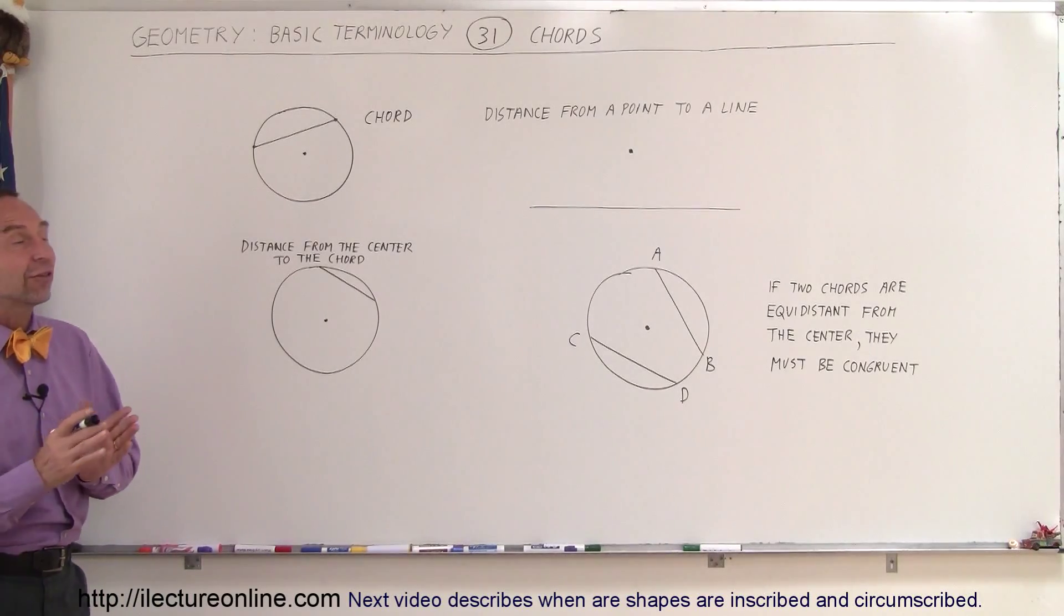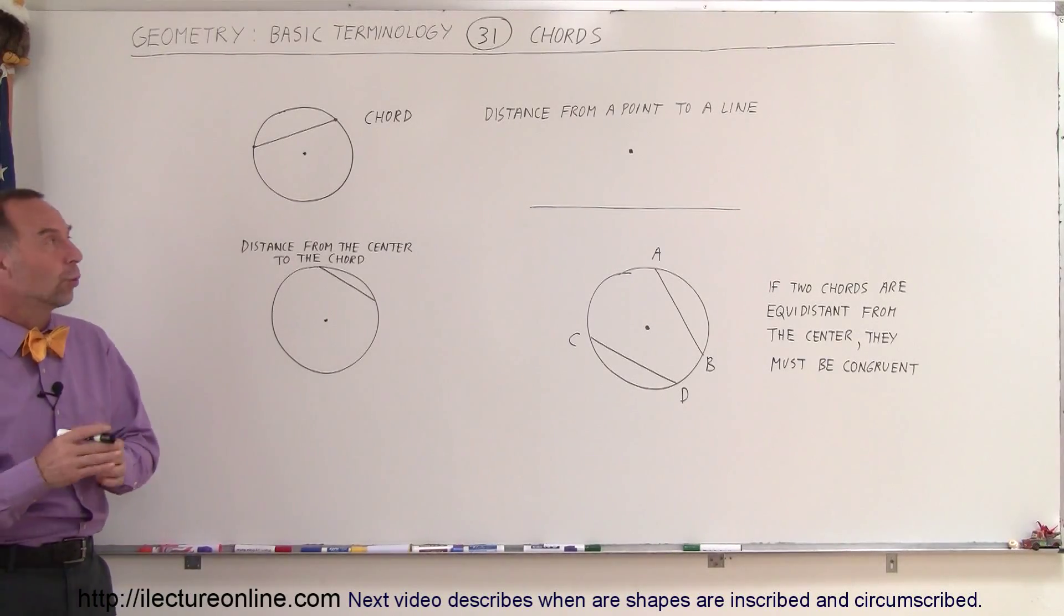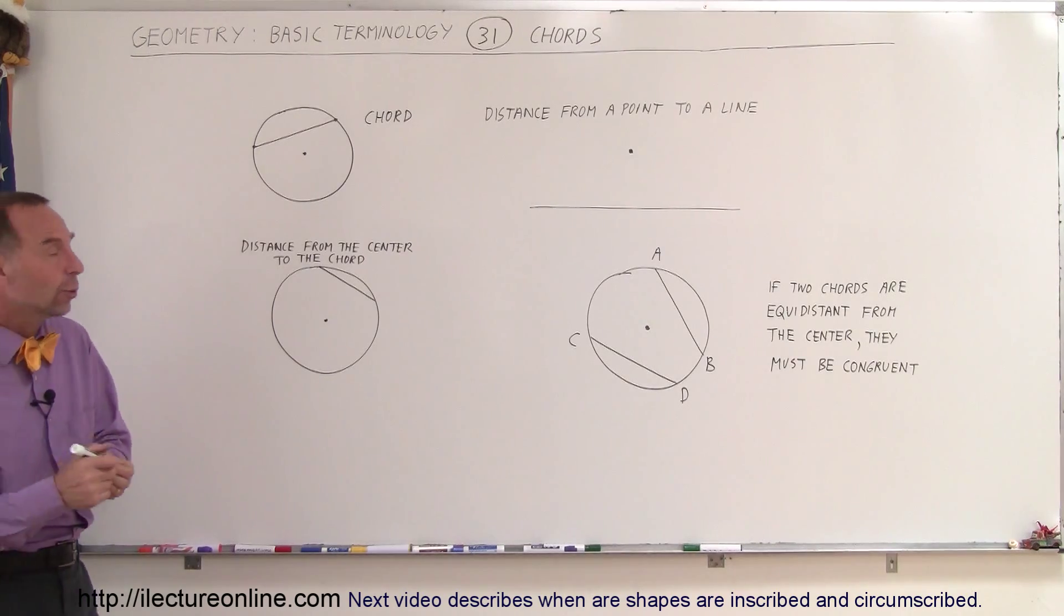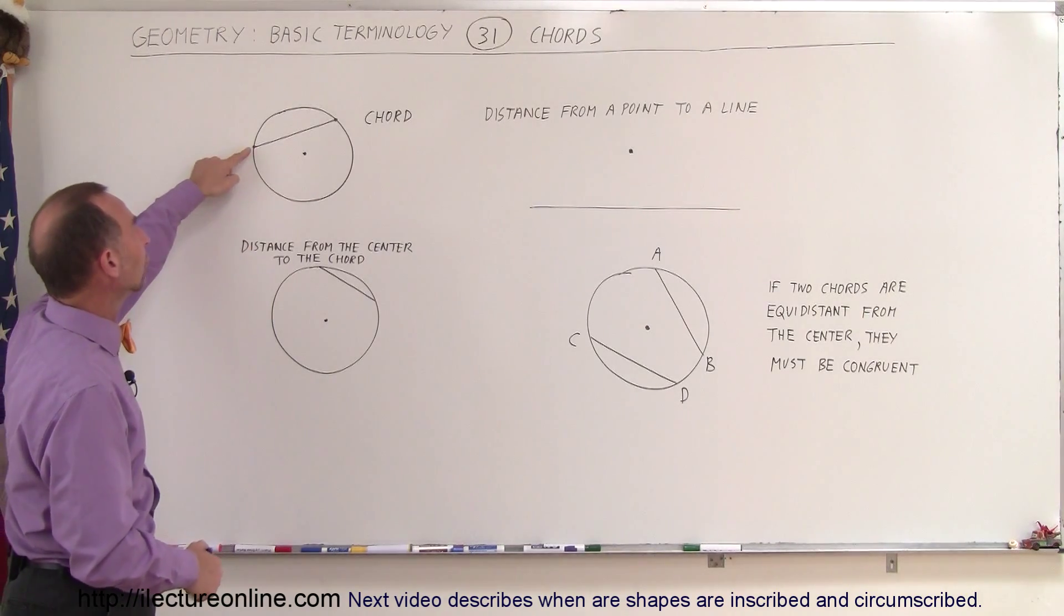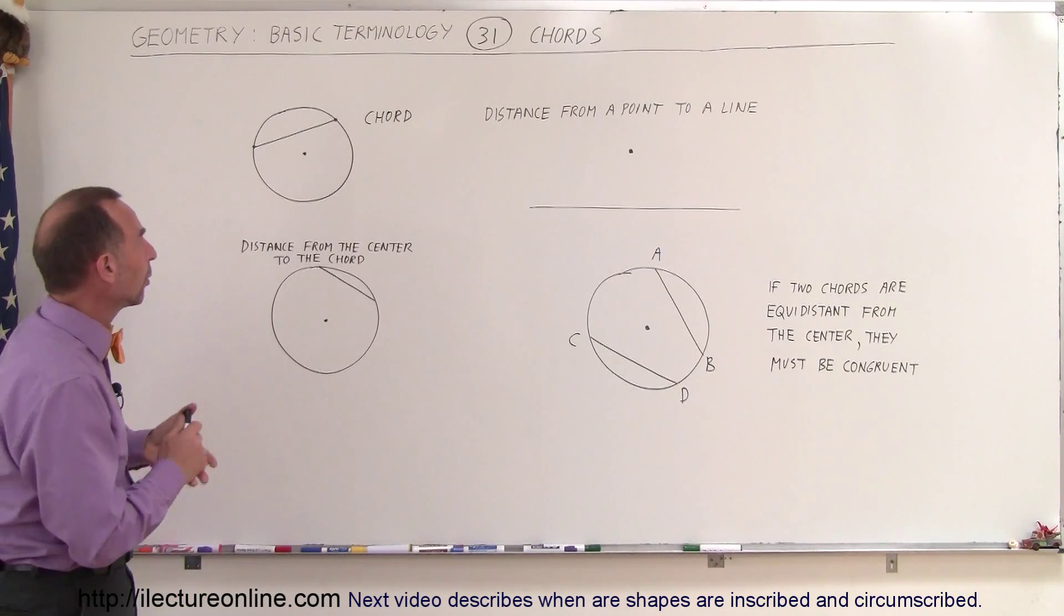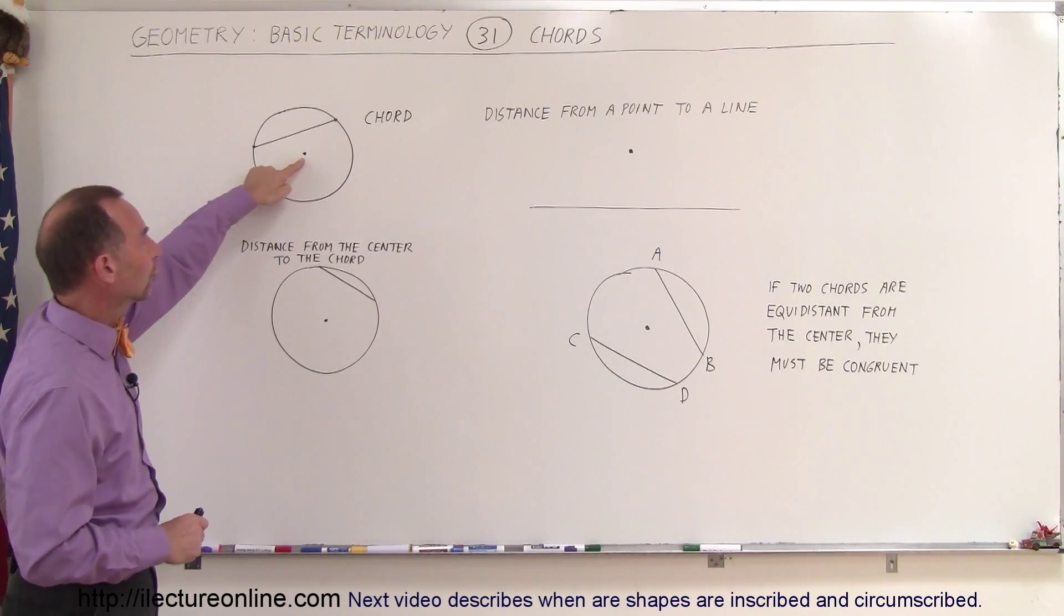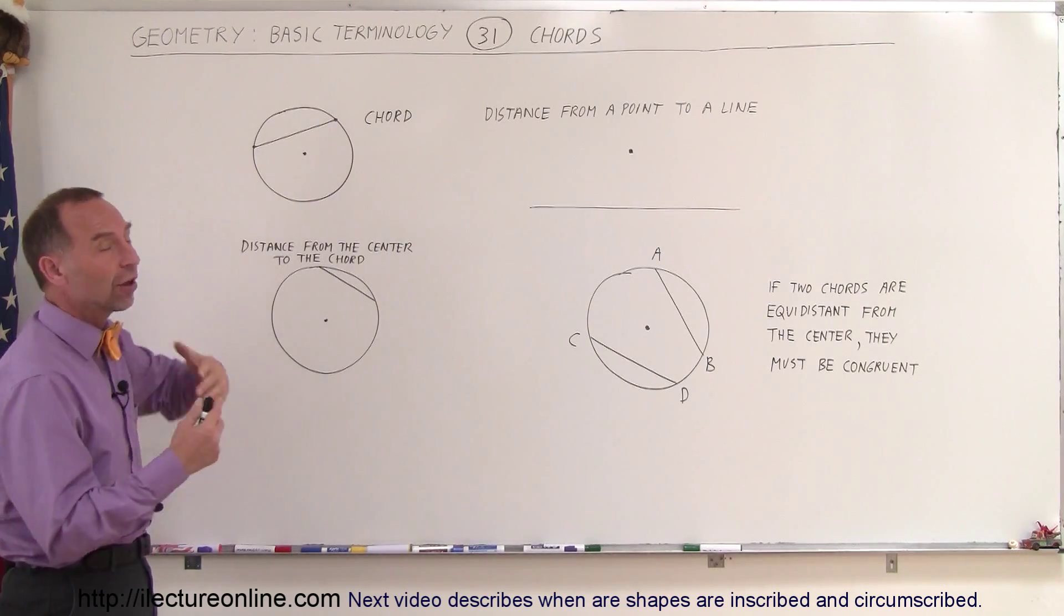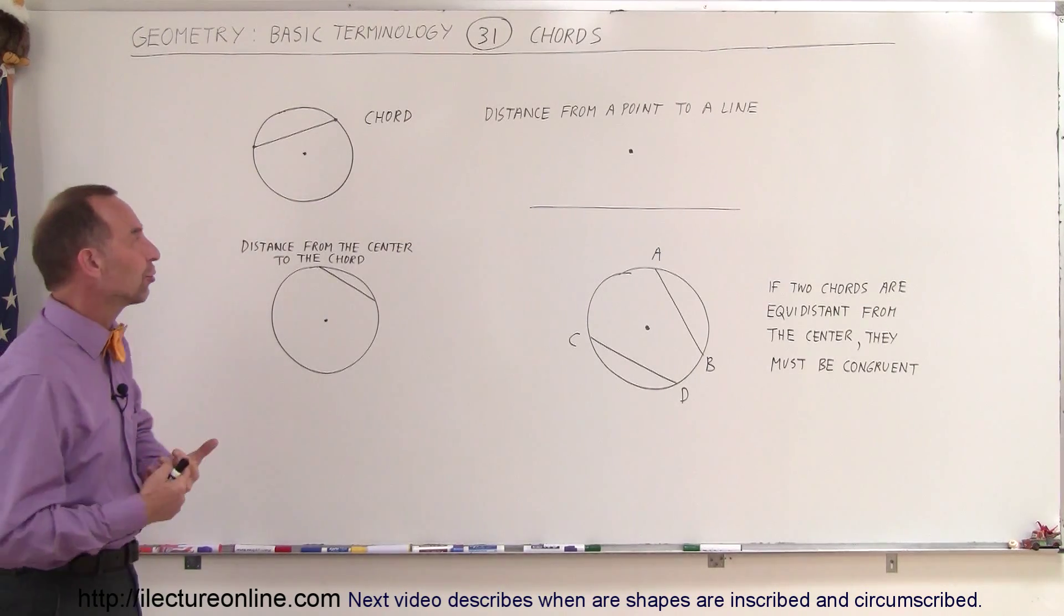Welcome to Electron Line. In this video let's talk about chords. What is a chord? A chord is a line or line segment that runs from one edge of the circle to another edge, or from one point on a circle to another point on a circle. The chord can go through the center of the circle. If it does, then it also is the diameter of the circle.